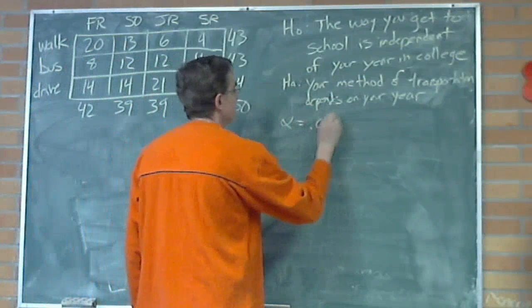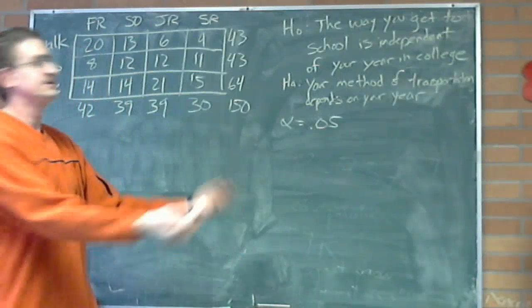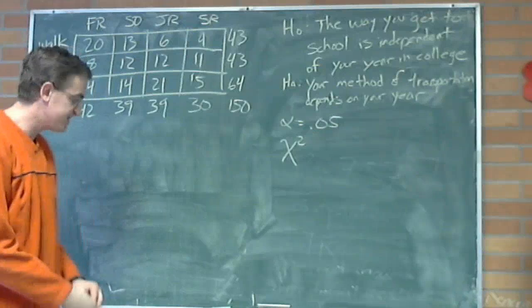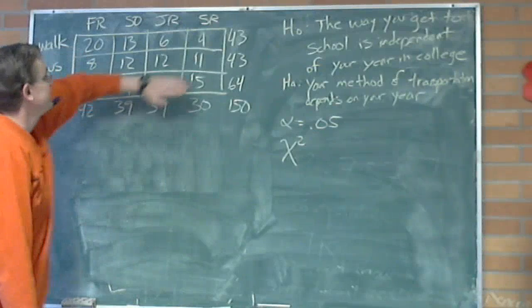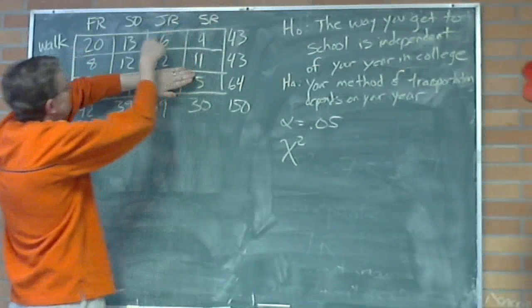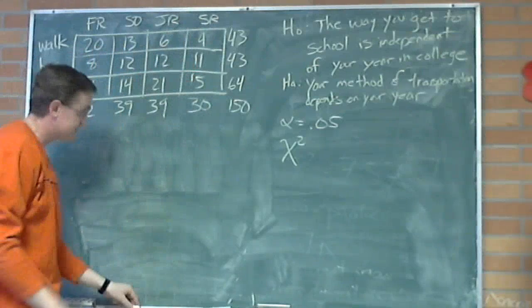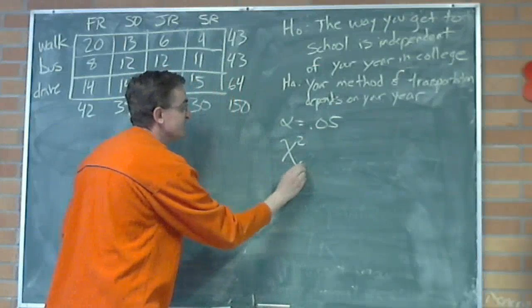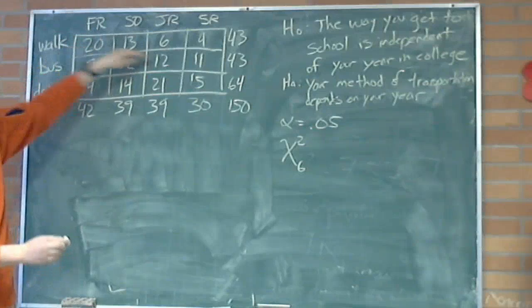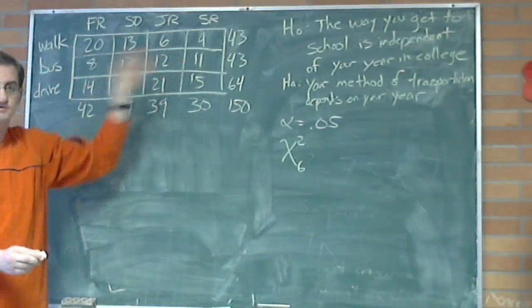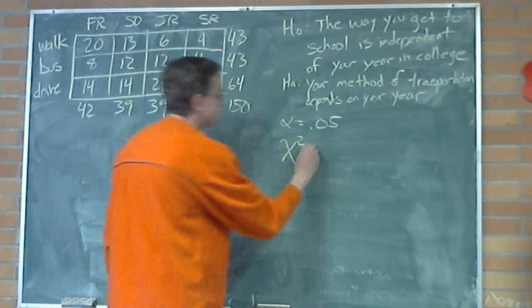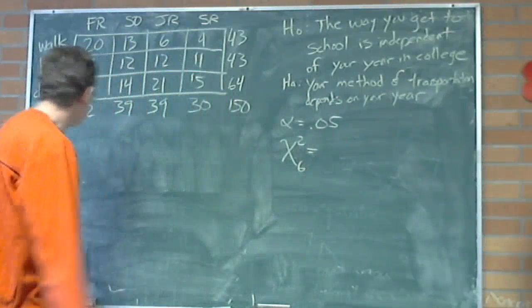Okay? So the null hypothesis says, really, the different years and the different ways of going to school, there's nothing to do with these, okay? It's just luck. But the alternative says, no, no, no. Seniors tend to do one thing, while freshmen tend to do something different. Which one do we believe? Well, let's work the rest of it out. My alpha, let's set that at 0.05. Why? Because everybody else does it. Chi squared. What are my degrees of freedom? I remember how to do this. You take away a row, you take away a column. How many blocks are left?